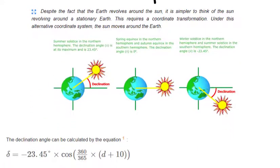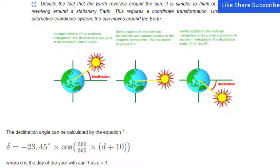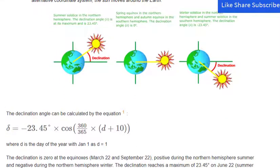The declination angle can be calculated by the equation, where d is the day of the year with January 1 as d equals 1.